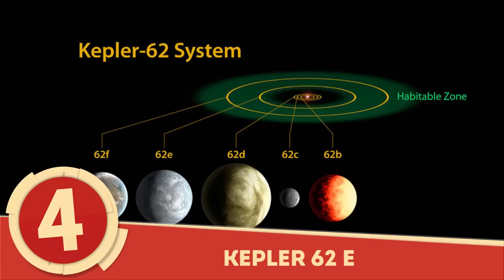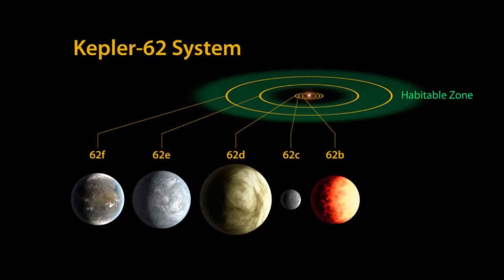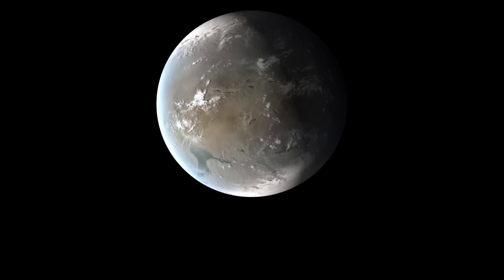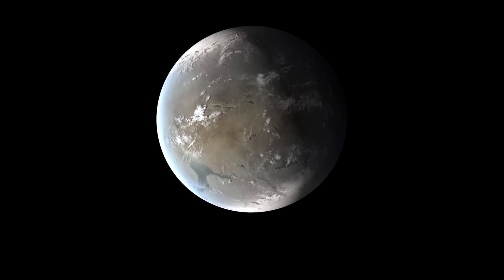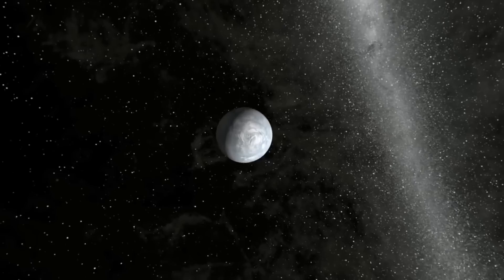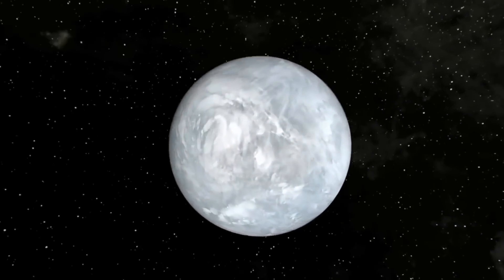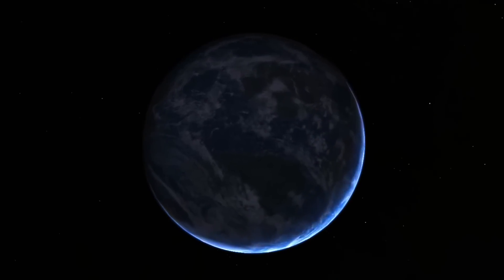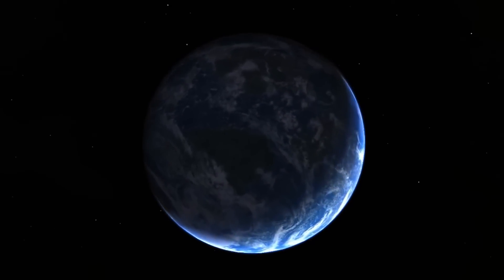Number 4: Kepler-62e. A super-Earth found within the habitable zone of the Kepler-62 star, this exoplanet, which was discovered in 2013, has an ESI of 0.83 and has some of the imperative qualities of potentially livable planets. On top of being rocky, the planet is also believed to be covered in an extensive amount of water.